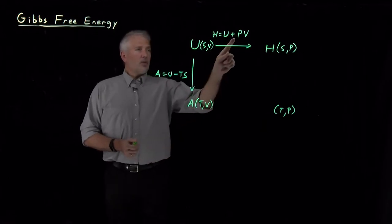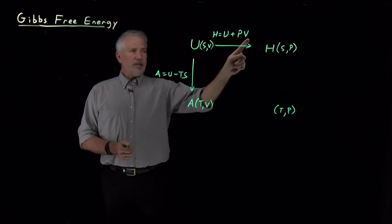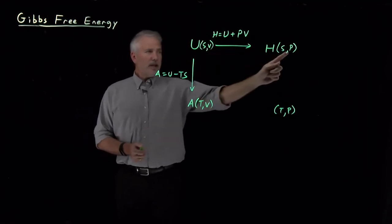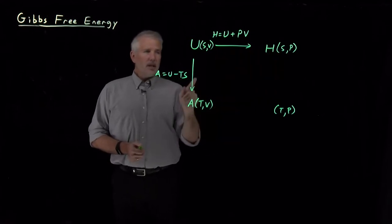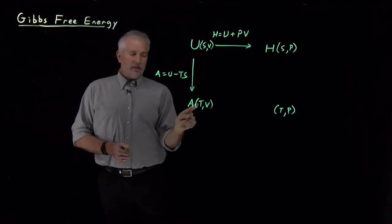Notice also what these transformations have done. When we added P times V to the energy, it swapped the natural variable V out for a P. Likewise, when we subtracted T times S, instead of having a natural variable of S, we transformed the function and the new function has a natural variable of T.